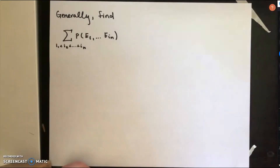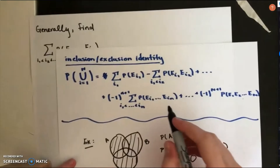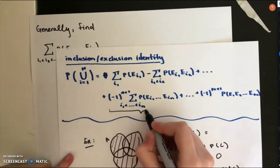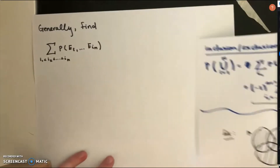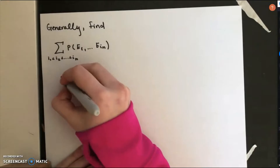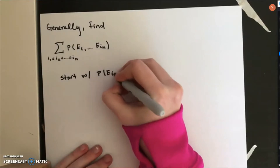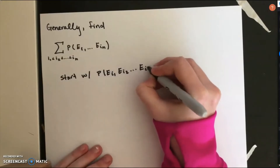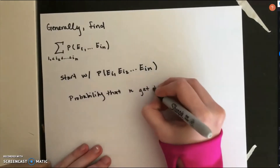If the general n-th term of the inclusion-exclusion identity is found, where little n ranges from 1 to big N, then this generalization can be plugged into every term in the identity. When little n equals 1, only one person selects their own hat, and when little n equals big N, everybody chooses their own hat. Notice that the probability of the intersection of events E sub i_1 through E sub i_n — the probability that little n people get their own hat — will be the same for all choices of i's, and therefore this quantity is a constant.